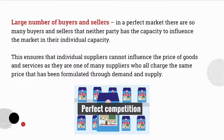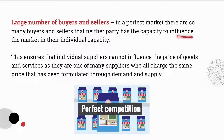The next characteristic we are going to look at is the large number of buyers and sellers. In a perfect market there are many many suppliers that a consumer can choose from. This empowers the consumer because it means they are not locked into buying from one or a few suppliers — instead they have numerous suppliers to choose from. All the sellers will charge the same price for goods and services, because that price has been formulated through the interaction of demand and supply. Neither party has the capacity to influence the market in their individual capacity.